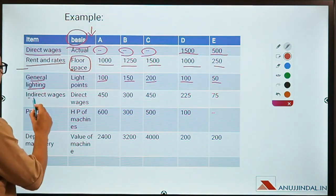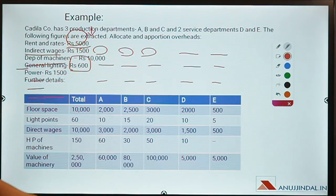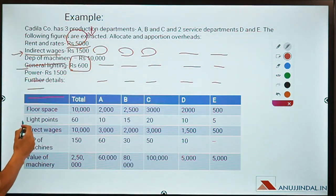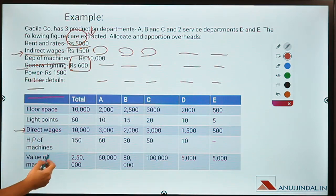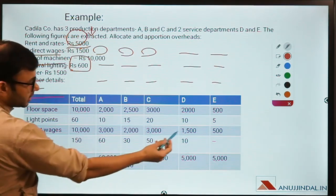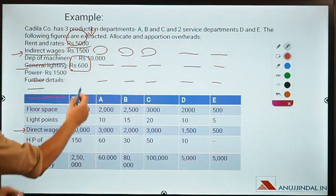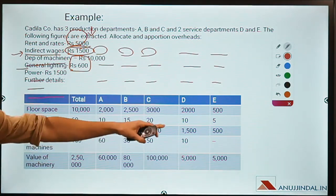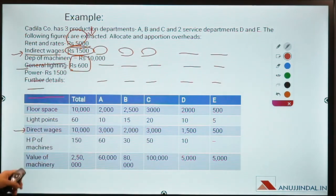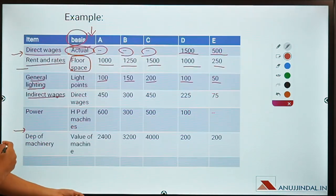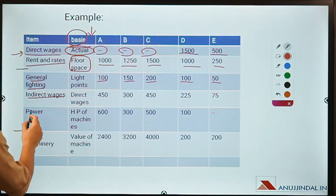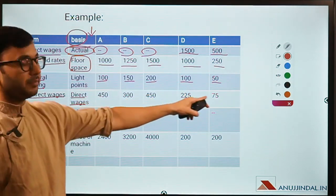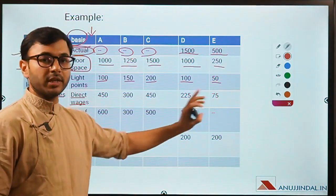Since the total is 60 light points and the expense is 600, that means we multiply each by 10, giving 100, 150, 200, 150, and 150 as the allocation. For indirect wages, the basis of division is direct wages — you divide the entire indirect wages of 1500 on the basis of the same percentage allocation as direct wages. The same percentage is followed for allocating indirect wages.